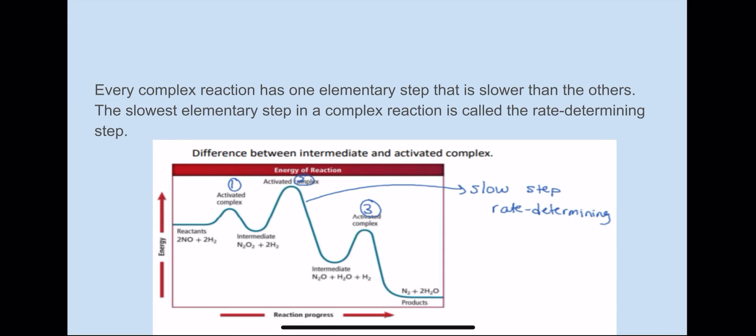So every complex reaction has one elementary step that is the slowest or slower than the others. The slowest elementary step in a complex reaction is called the rate determining step. In this graph, you'll notice many ups and downs and that the activated complex and the intermediates are on opposite sides. We will explain the differences of this in the next slide.